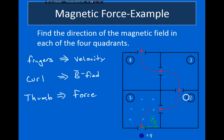When the charged particle moves into the second quadrant, it's moving toward the right but the magnetic force points up. Orient the hand so the thumb points toward the top of the screen and fingers point toward the right. When doing this, the palm points inward toward the screen, and curling the fingers they also point inward toward the screen. So the magnetic field in quadrant two points into the screen, represented by X's.